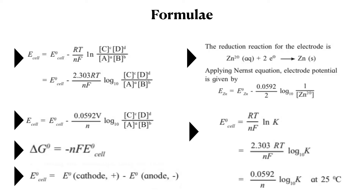For chromium, the reaction is Cr3+ plus 3 electrons giving Cr. So the electrode potential of chromium is E-naught-chromium minus 0.0592 upon 3, log base 10 of 1 upon [Cr3+]. So the denominator in the log term matches the number of electrons exchanged.